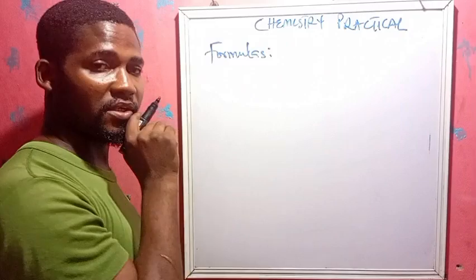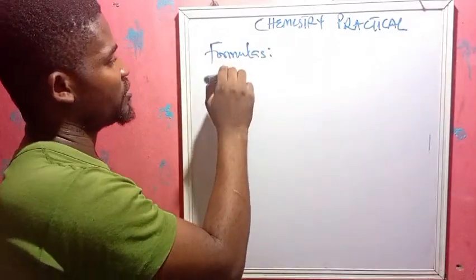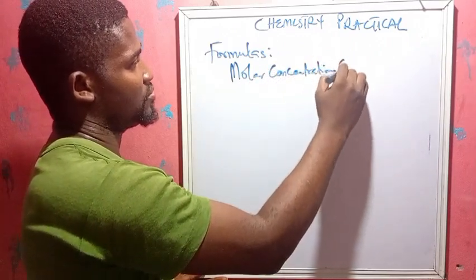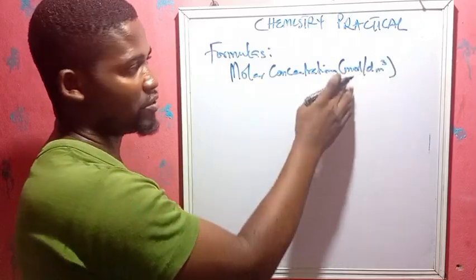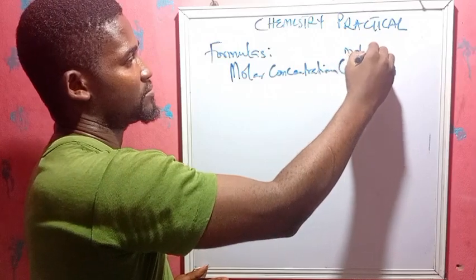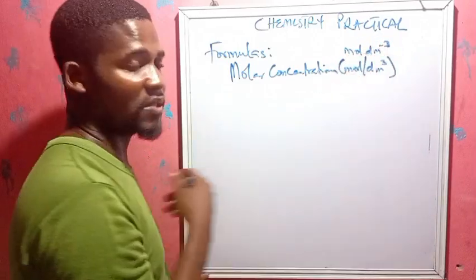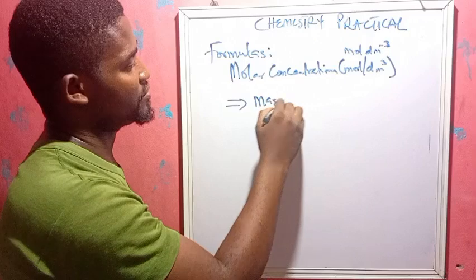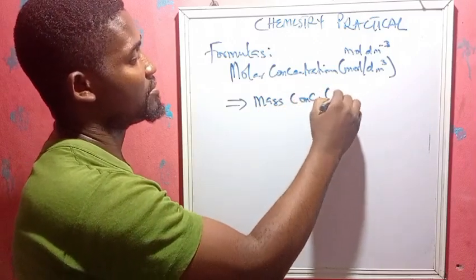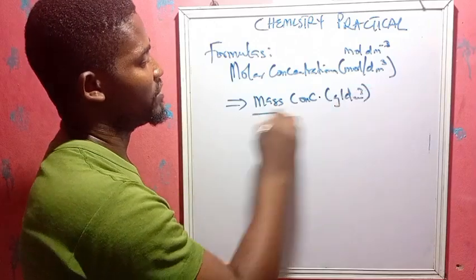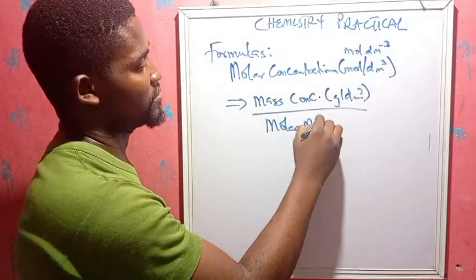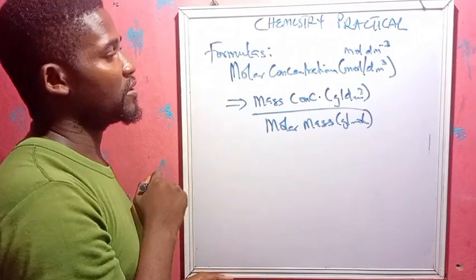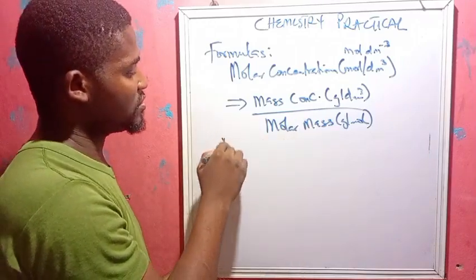This is the second part of the class — formulas we need to know. First: molar concentration, in mol/dm³. This equals mass concentration (in g/dm³) divided by molar mass (in g/mol). Units are very important. That is the first formula you may need.